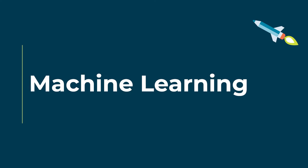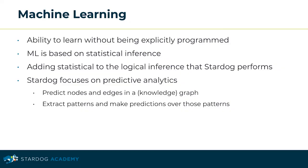In the first section, we're going to discuss what is machine learning, the machine learning development lifecycle steps, and the Stardog services available for machine learning model development. Machine learning is the study of computer algorithms that improve automatically through experience. It is seen as a part of artificial intelligence. To give a simple definition, machine learning is the ability to learn without being explicitly programmed. For example, machine learning algorithms build a model based on sample data, known as training data, in order to make predictions or decisions without being explicitly programmed to do so.